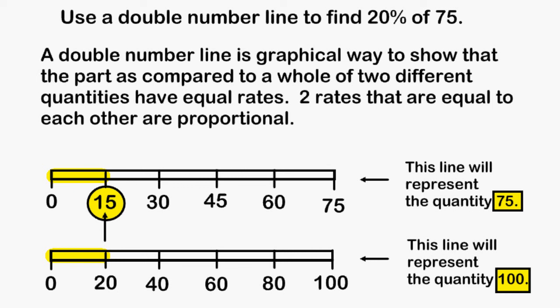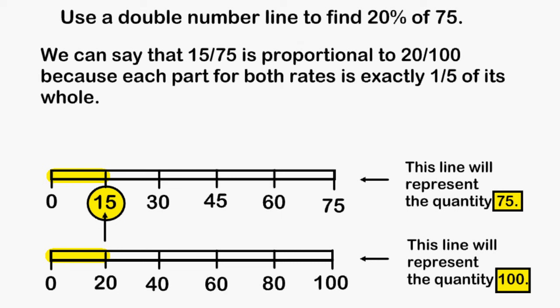We can say that 15 out of 75 is proportional to 20 out of 100 because each part for both rates is exactly one-fifth of its whole.